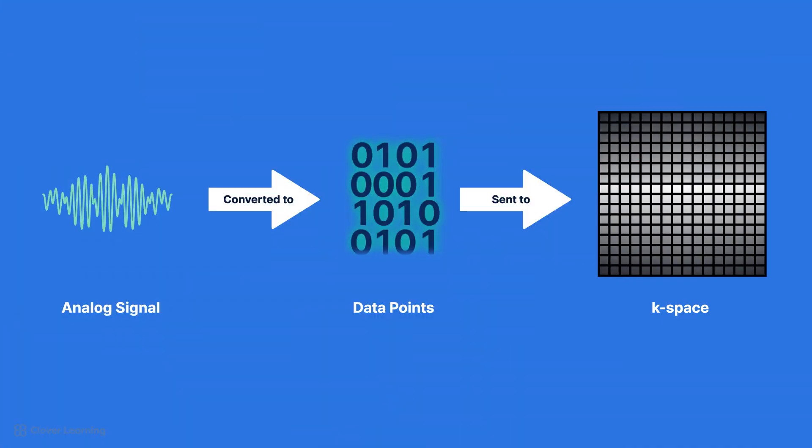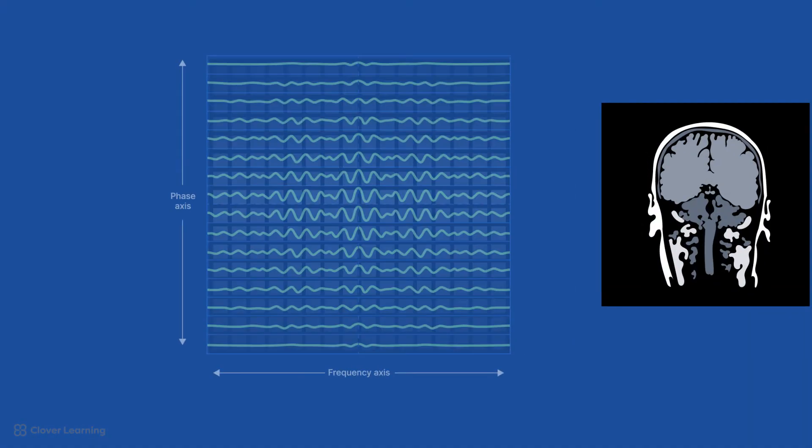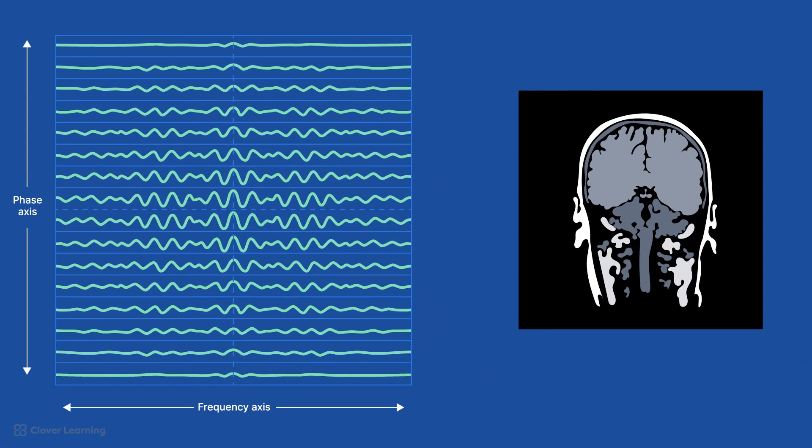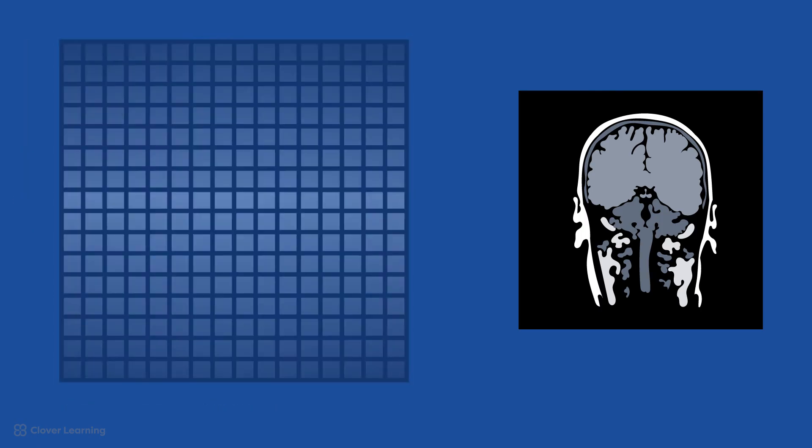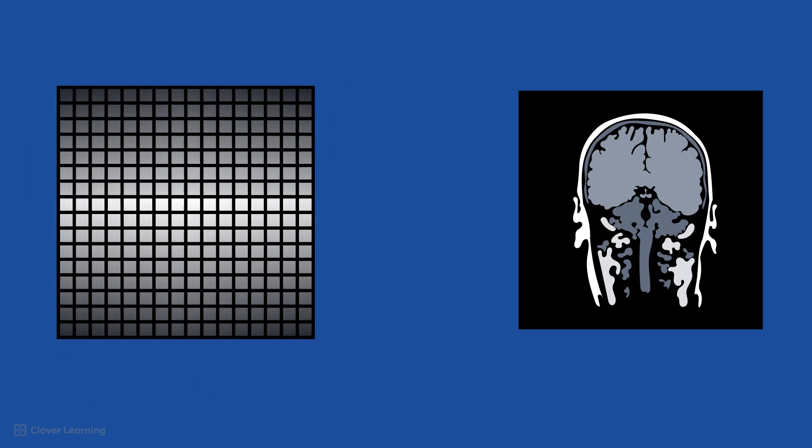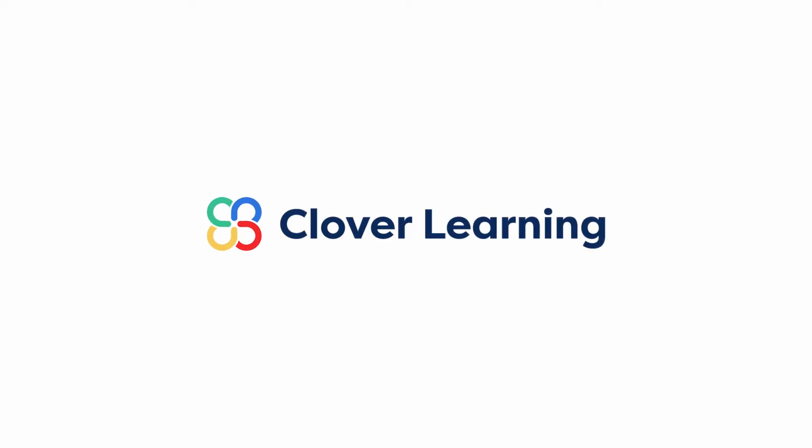In summary, k-space is a digital storage space that holds the digital signals collected by the MRI scanner. K-space is measured in radians per centimeter. The data are arranged in a matrix, with the highest concentration of signal and contrast located in the center lines, and the highest concentration of detail and resolution on the outer lines. After the k-space matrix is filled, a complex mathematical process called the Fast Fourier Transform, or FFT, is applied to produce an image.